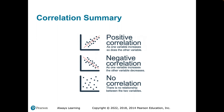Correlation summary: if the line we eyeball raises to the right, we have a positive correlation — as one variable increases, so does the other. A negative correlation means as we move to the right, our pattern of data decreases. And if there's no linear association, we say there's no relationship between the two variables.